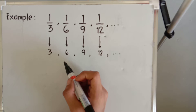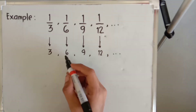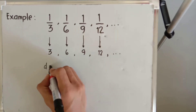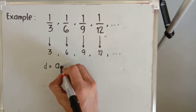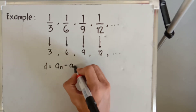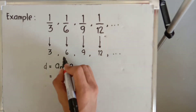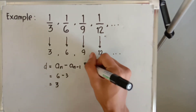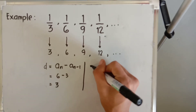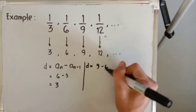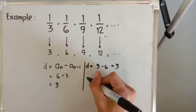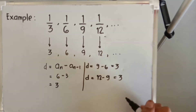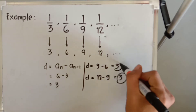After reciprocating all the terms, we will now find their common difference. The common difference D is equal to the succeeding term minus the preceding term. So six minus three equals three. Let's check another: nine minus six is still equal to three. And twelve minus nine is still equal to three.